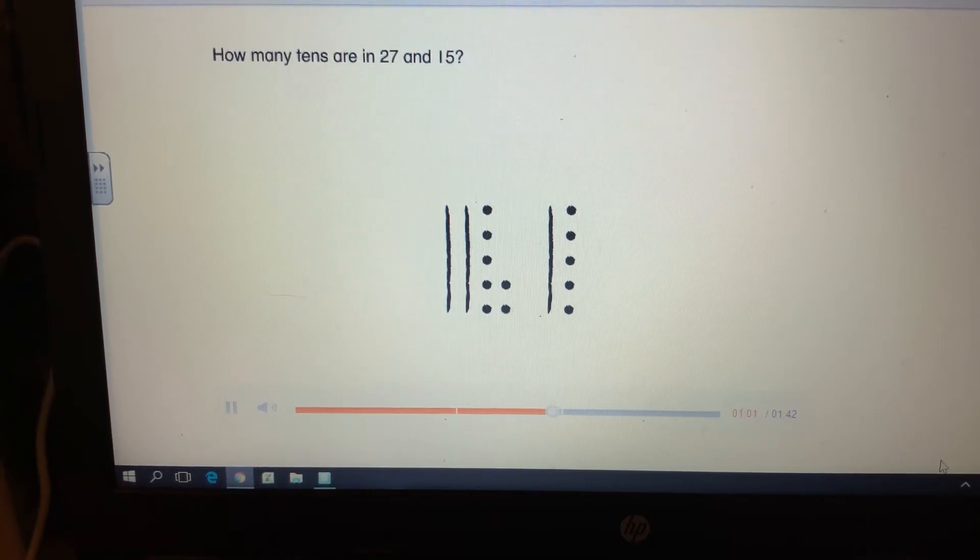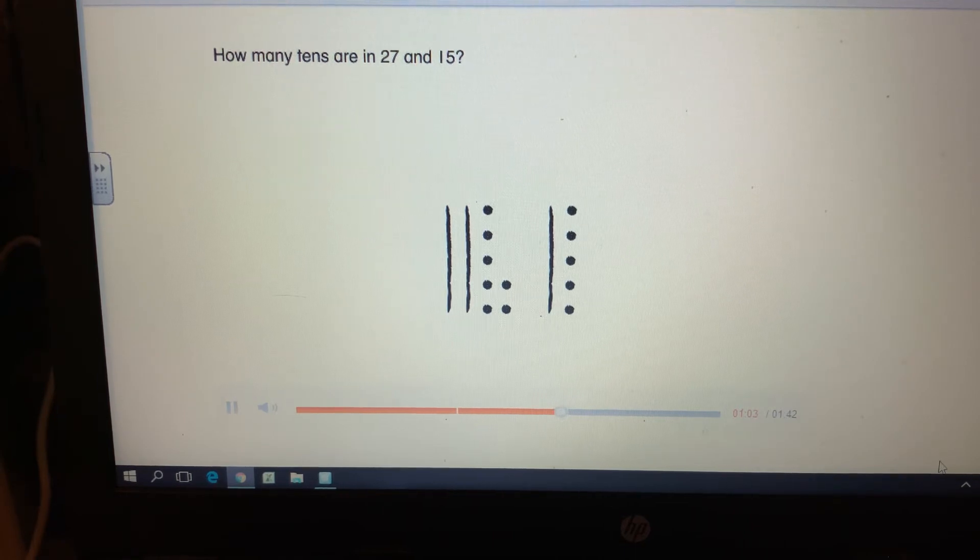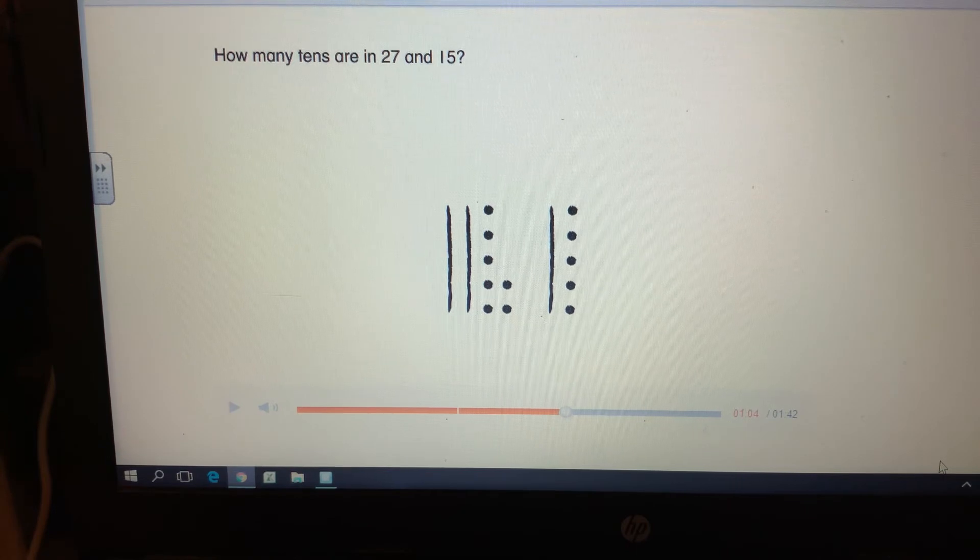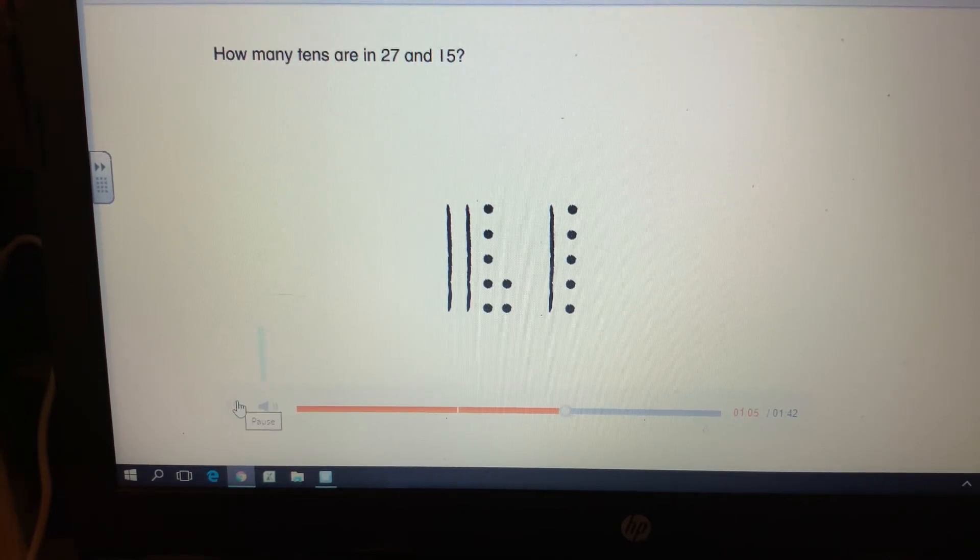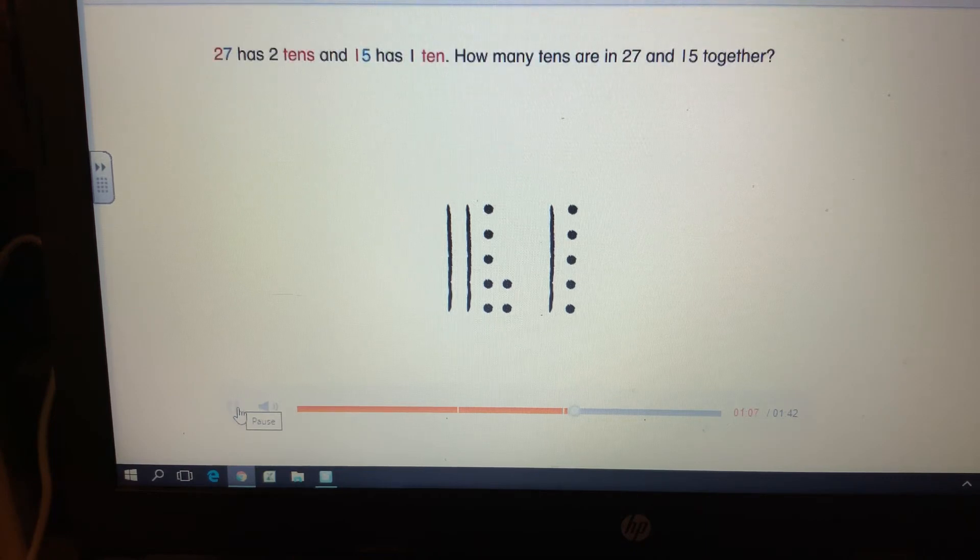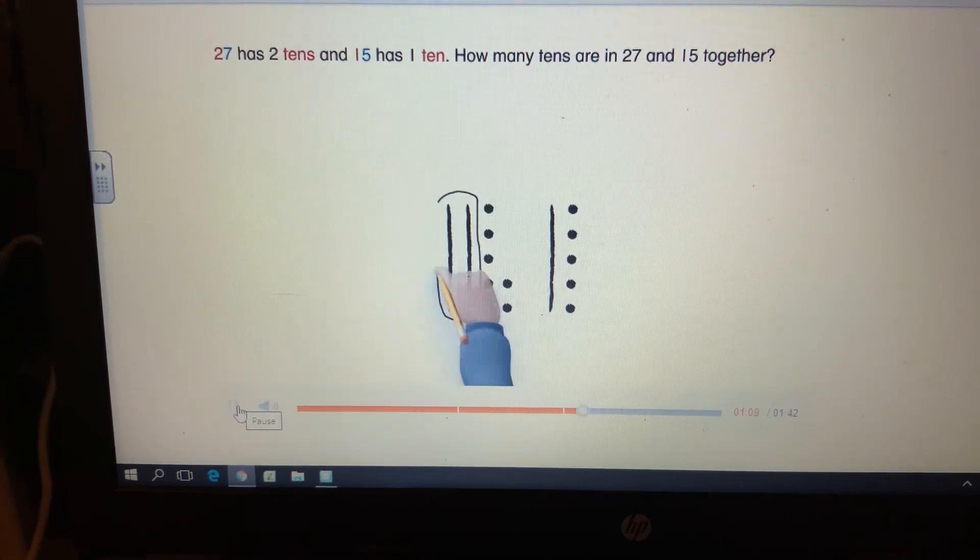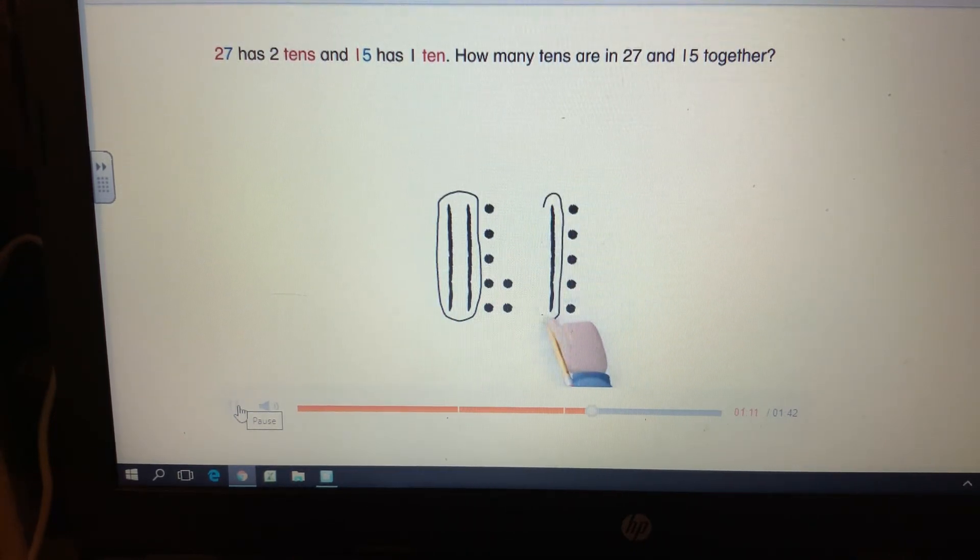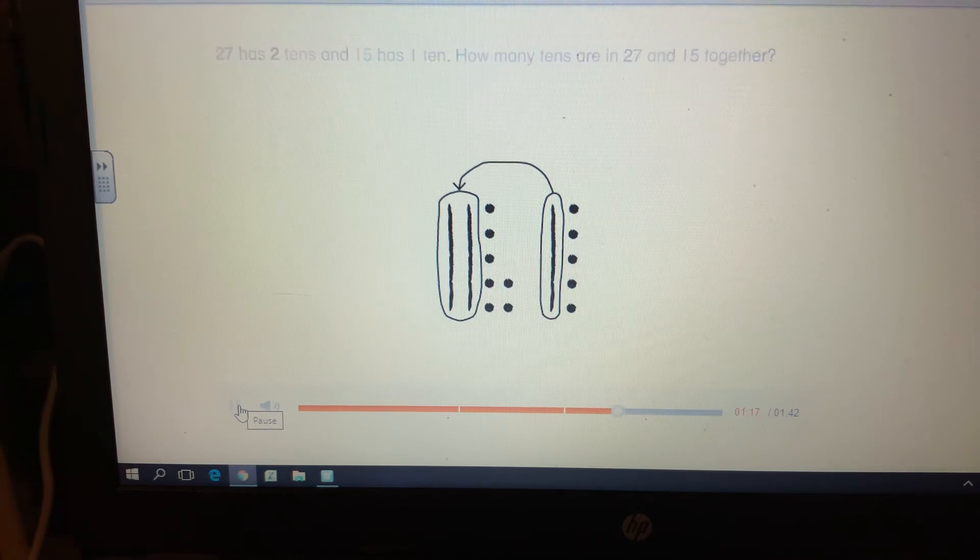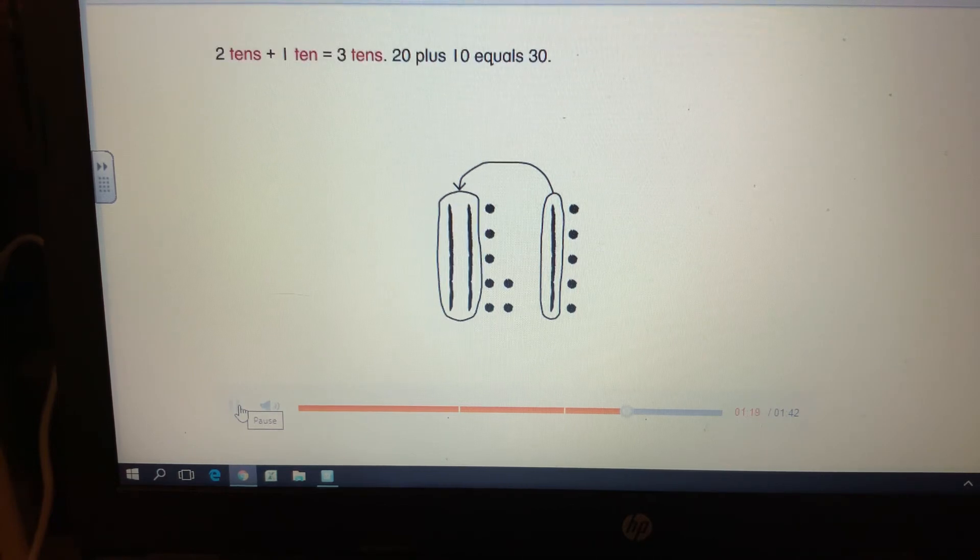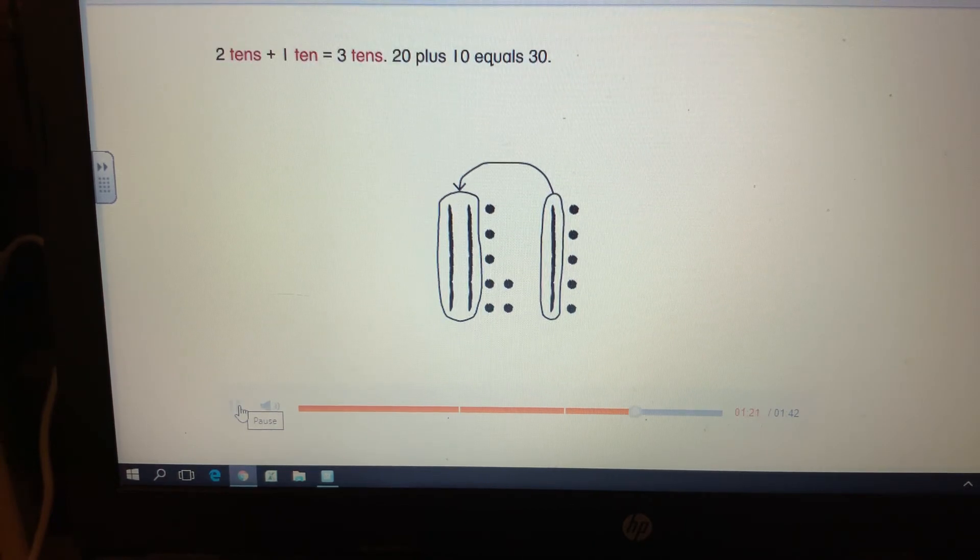How many tens are in 27 and 15? 27 has two tens and 15 has one ten. How many tens are in 27 and 15 together? Two tens plus one ten equals three tens. Twenty plus ten equals thirty.